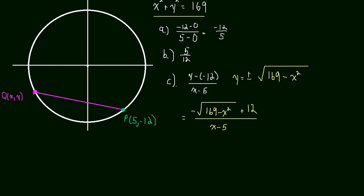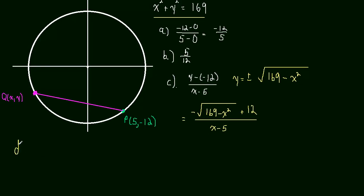Now what they want to know in question D, and this is really the interesting question. Question D. They want to know what's the limit as X approaches 5 of what you just found. So if we look at this limit, we would have a zero in the denominator. And 169 minus what would be 5 squared, which is 25, is 144.